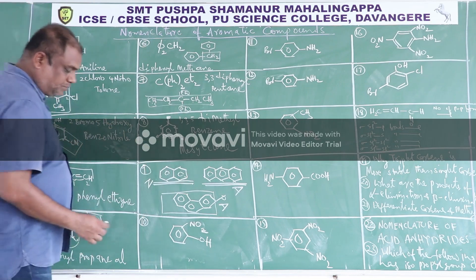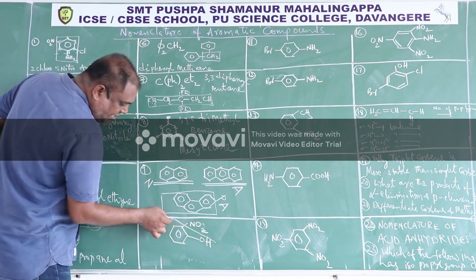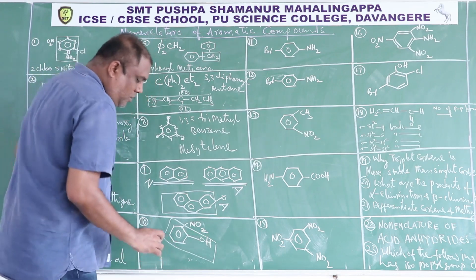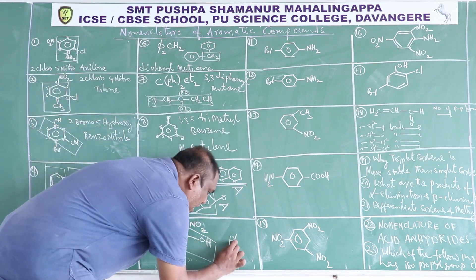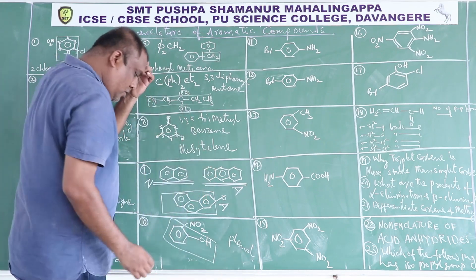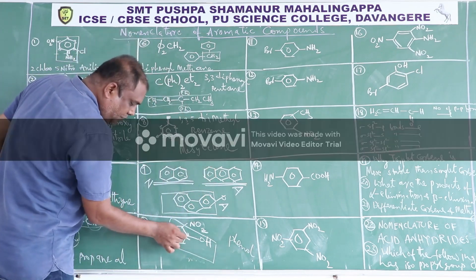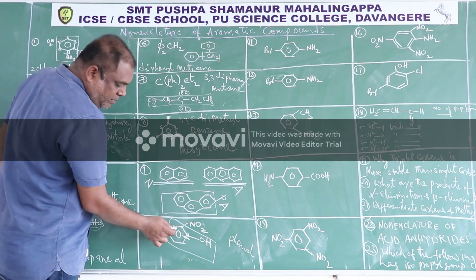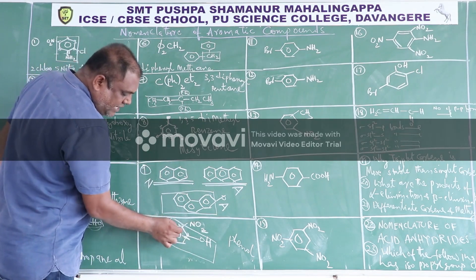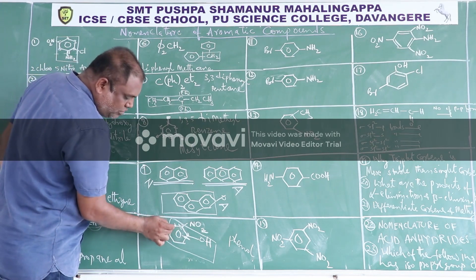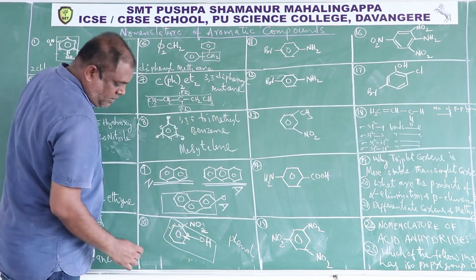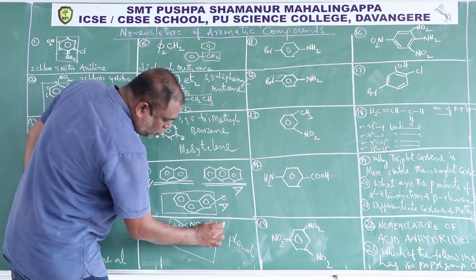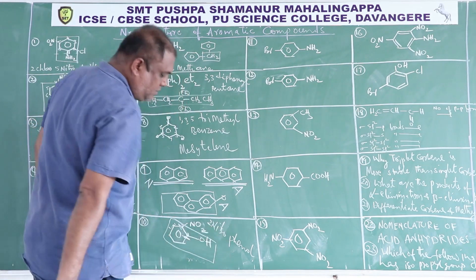Here the base compound is phenol. The phenolic carbon is given number 1, and numbering is done so that the immediate next substituent gets the least possible number: 2, 3, 4. Therefore the IUPAC name is 2-nitrophenol.